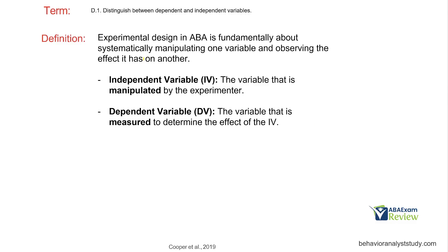Experimental design in ABA is at the core about manipulating one variable and observing the effect it has on another. Whether we're doing a multiple baseline design, a changing criteria design, or a withdrawal, what we're looking at is manipulating a variable and observing the effect it has on another. From a clinician standpoint, when you manipulate a variable, you're typically looking at trying new interventions or new behavioral strategies to see the effect it has on your client's behavior. We describe these as the independent and dependent variable.